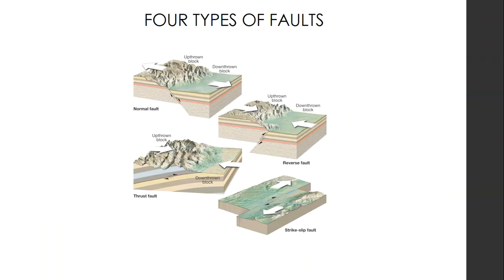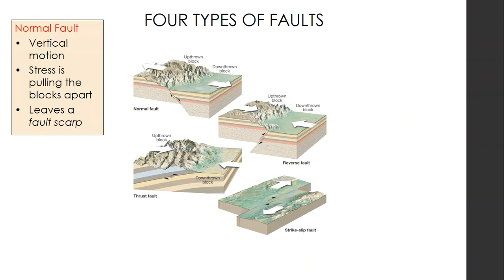There are four types of faults. The first is a normal fault, where you get vertical motion and the stress is from two blocks pulling apart. What you get as a result is a fault scarp — an up-thrown block and a down-thrown block. It's a little counterintuitive that pulling something apart would push something up, but as the two blocks pull apart, the crust has to make up that surface area somewhere, leaving that fault scarp.